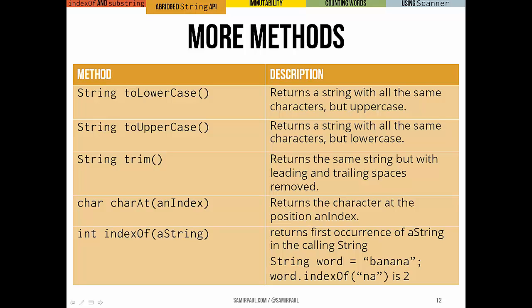toLowerCase and toUpperCase just return versions of the string with all the same characters but with the cases changed. trim takes away all the leading and trailing spaces. charAt we've used before, it gives us the character at the index that we specify.